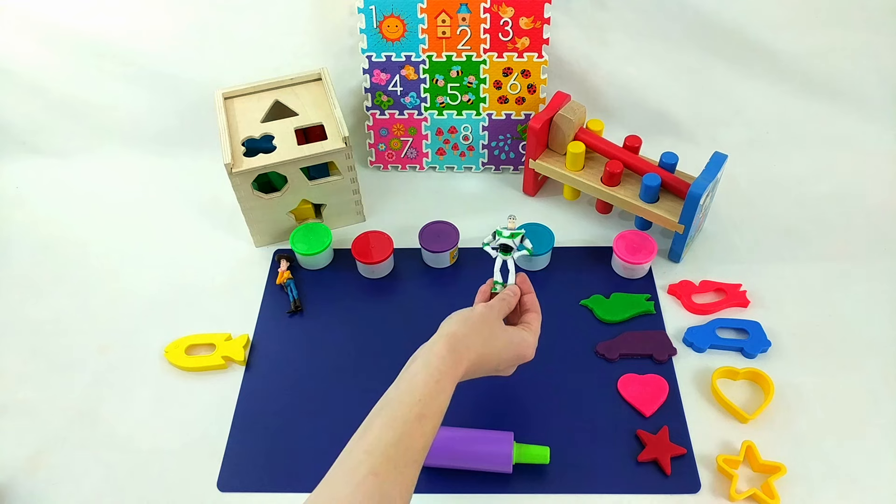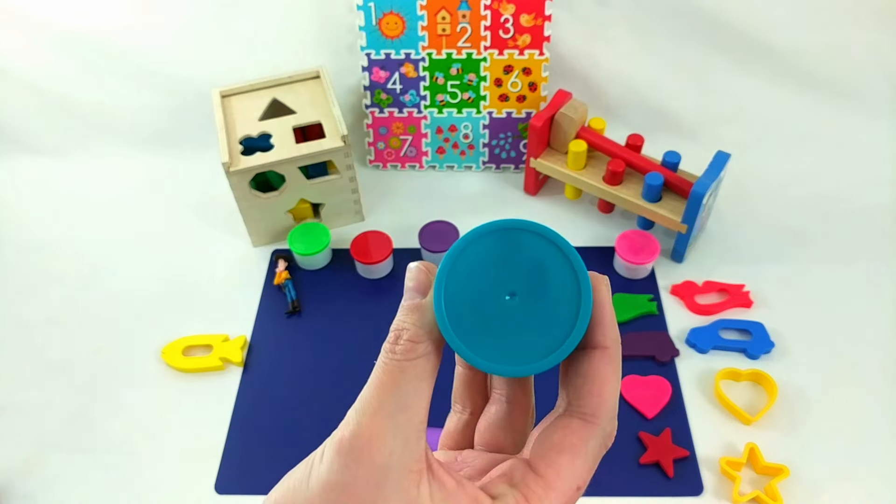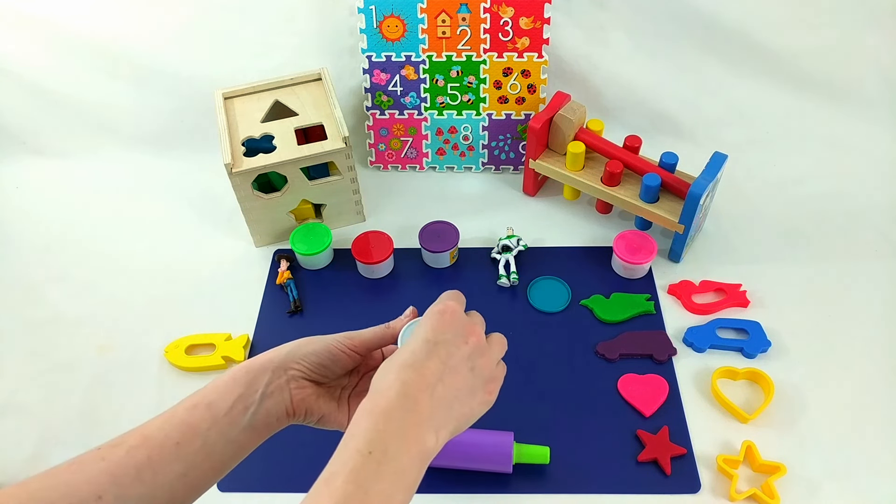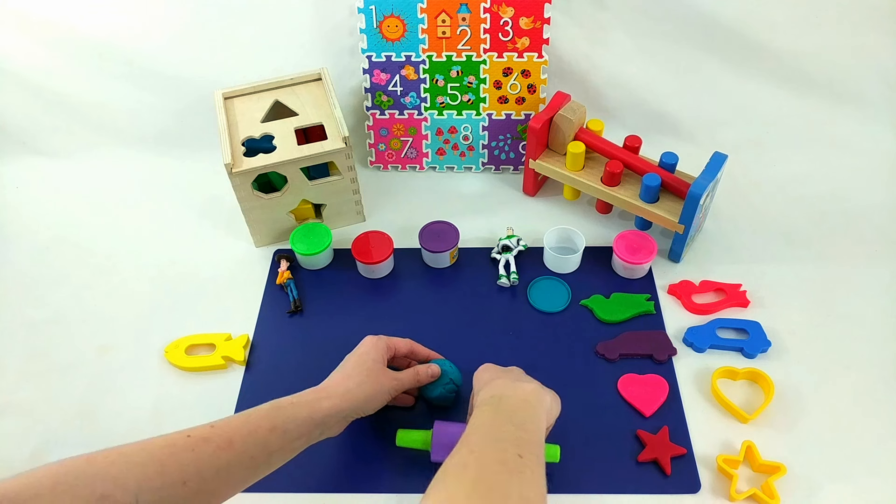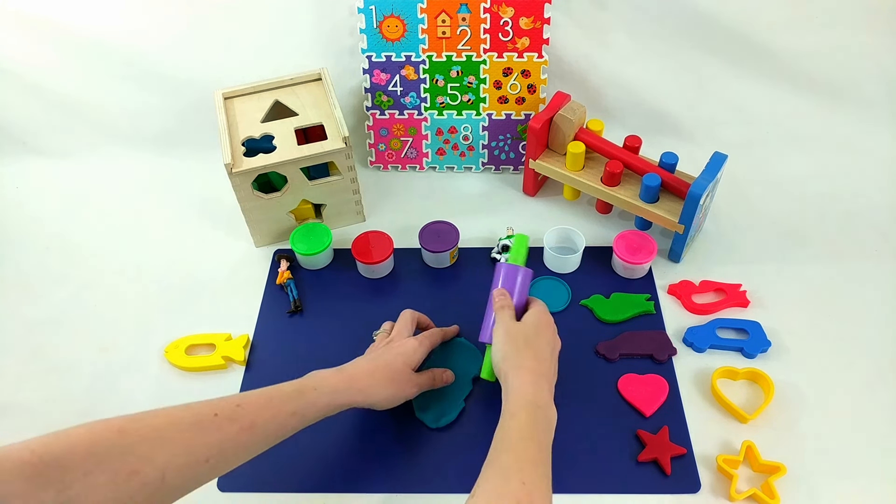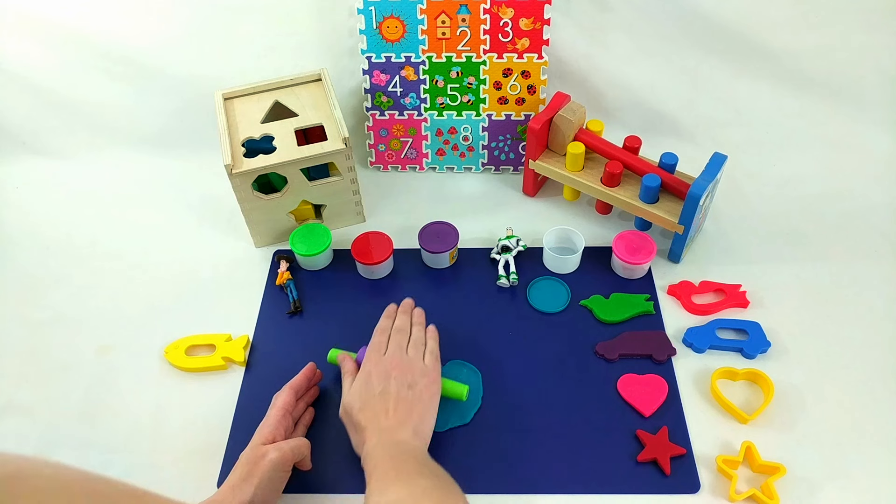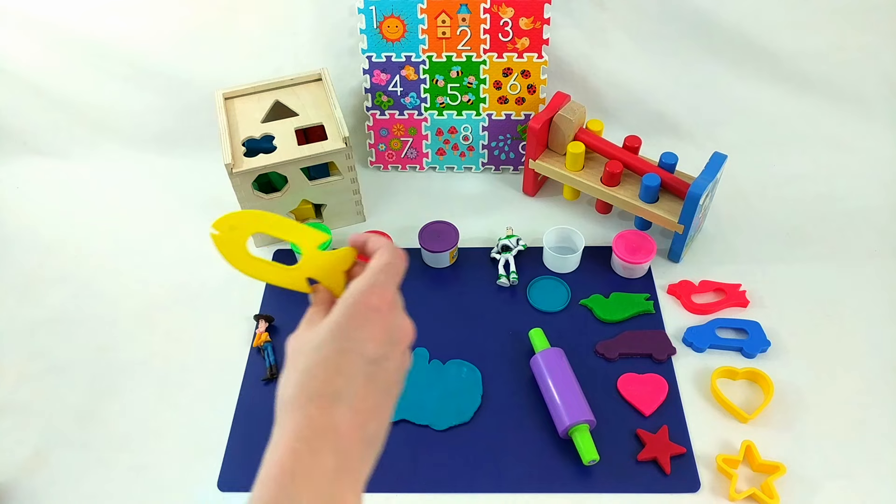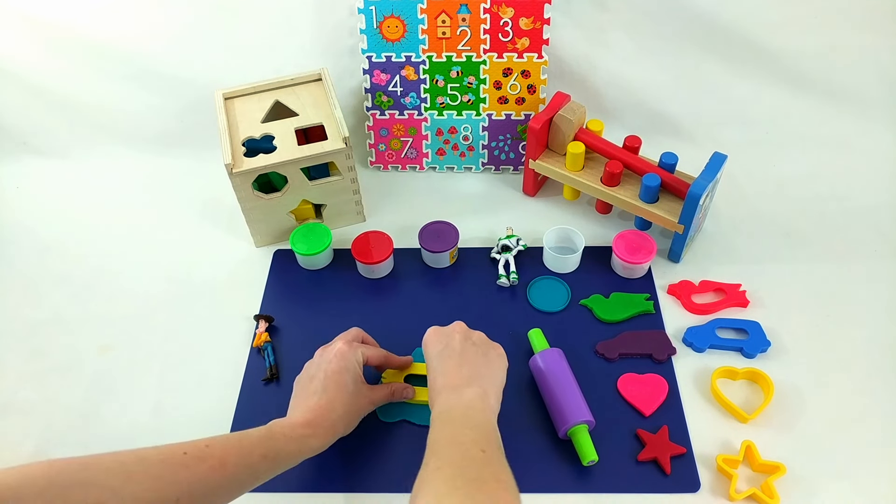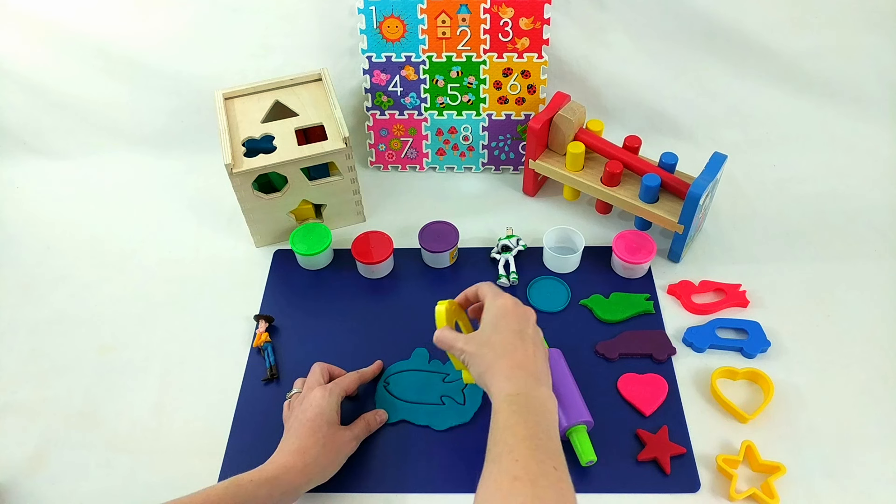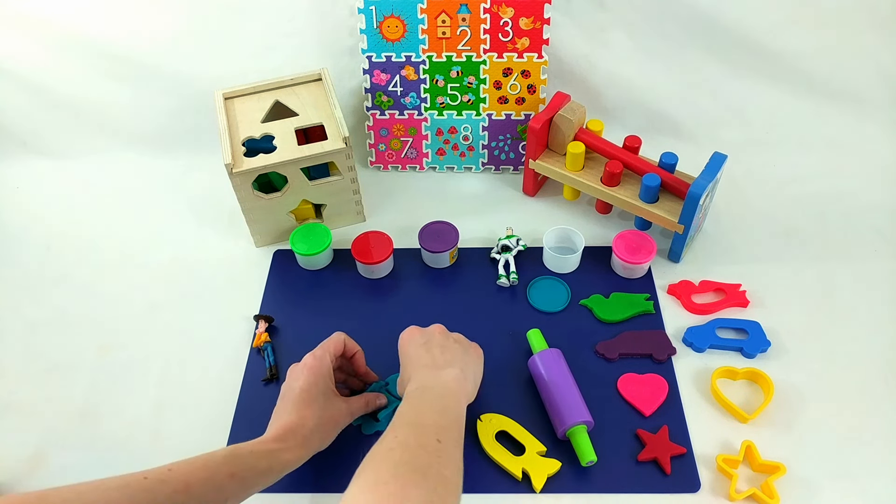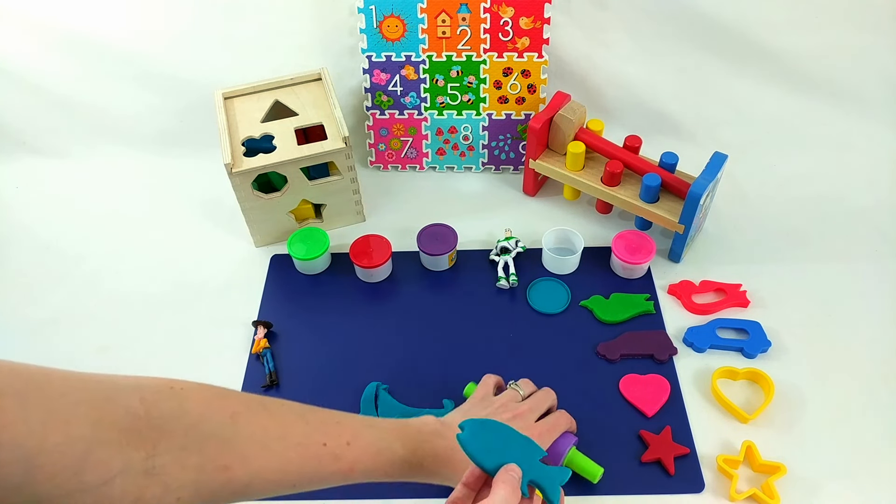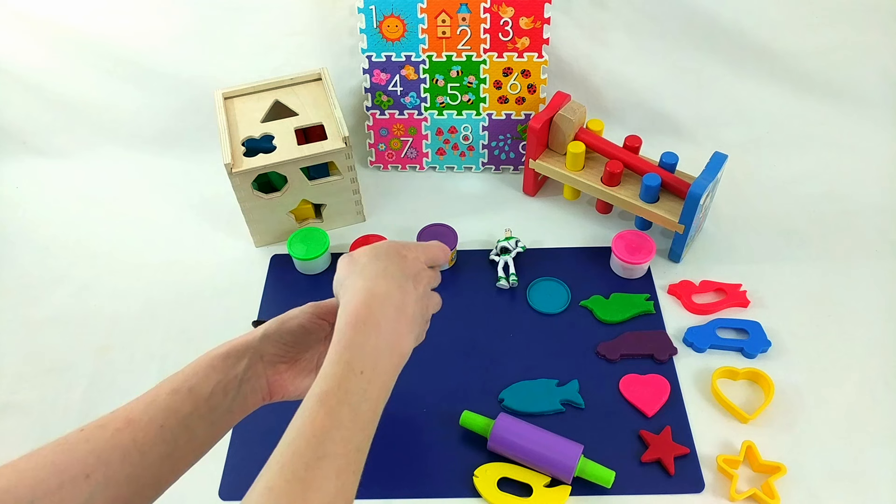Okay, Buzz. Which color is left? We haven't used blue yet. Blue! Okay, let's roll out the blue Play-Doh. And Woody, I guess that means we're making a fish. There we go. That's our last shape. What a great fish. It's a blue fish.